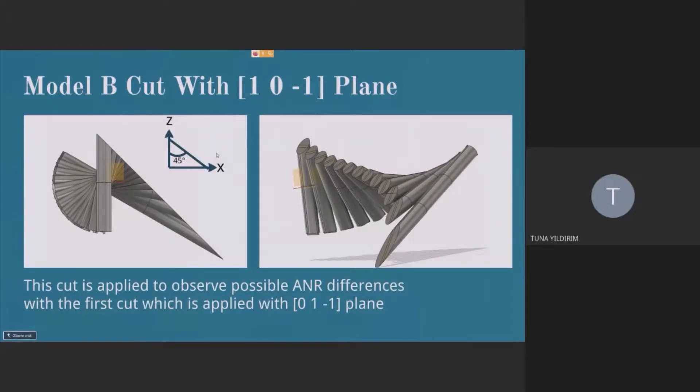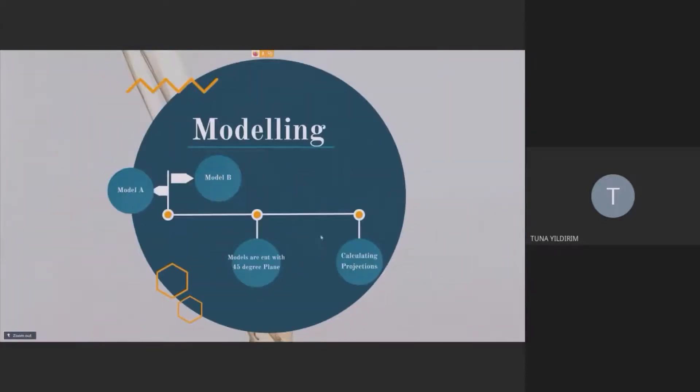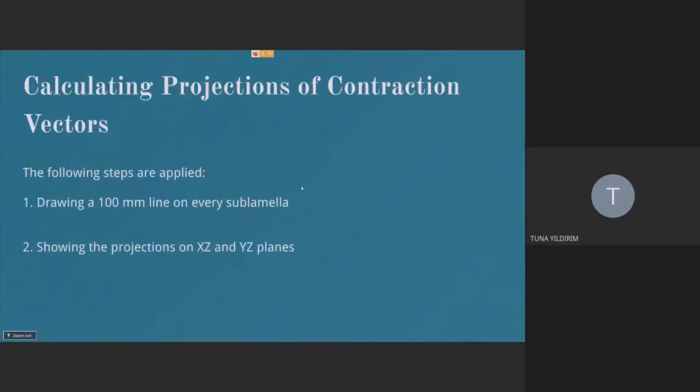Then after this point, we'll examine the results, the ANR results. But before that, I'll show you how I did calculate the contraction vectors to calculate ANR. I drew 100 mm lines on every sublamella. And I show the projections on two planes.